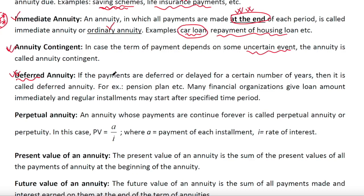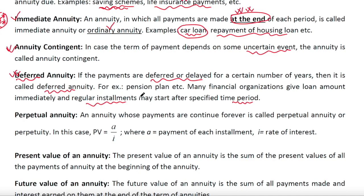Deferred means delayed. When payments are deferred or delayed for a certain number of years, it is called deferred annuity. For example, pension plans. Many financial organizations give loan amounts immediately, and regular installments may start after a specified time period. For instance, a house building company gives a loan to customers to build their house, and after one year, they start counting the regular installments. This type of annuity is called deferred annuity.